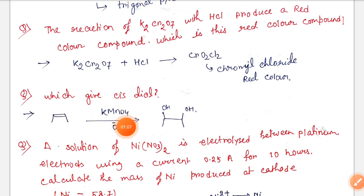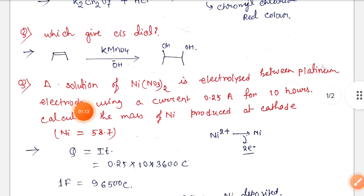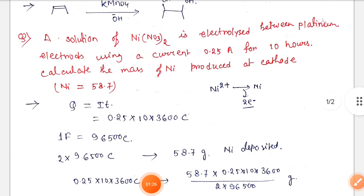Next, a solution of Ni(NO3)2 is electrolyzed between platinum electrodes using a current 0.25 ampere for 10 hours. Calculate the mass of Ni produced at cathode, or mass deposited at cathode.